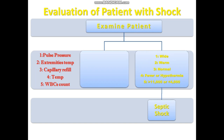On the other hand, if the patient has a narrow pulse pressure, cold and clammy extremities, delayed capillary refill time, and normal temperature and WBC count, this can either be cardiogenic shock or hypovolemic shock. The next step is how to differentiate between cardiogenic and hypovolemic shock.